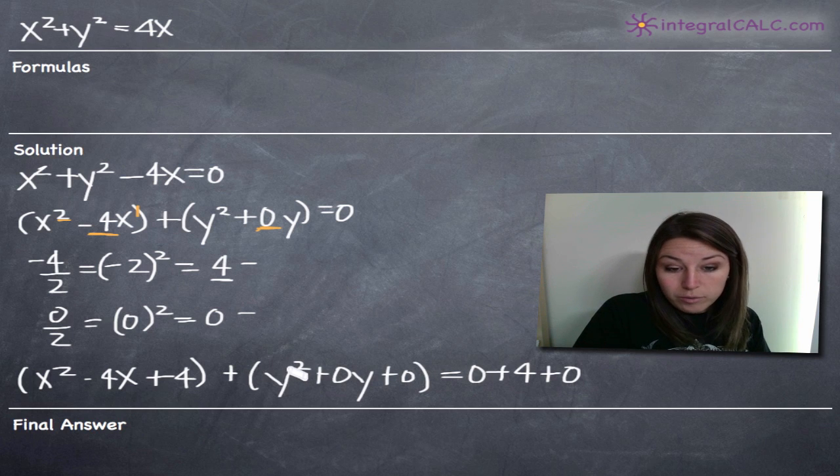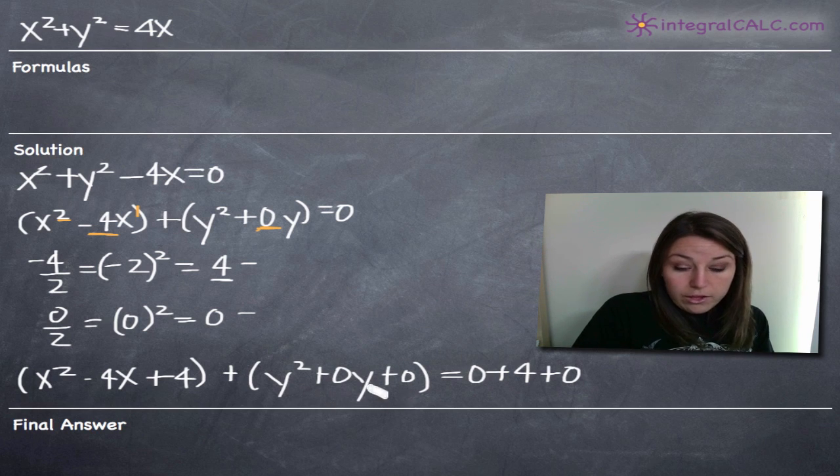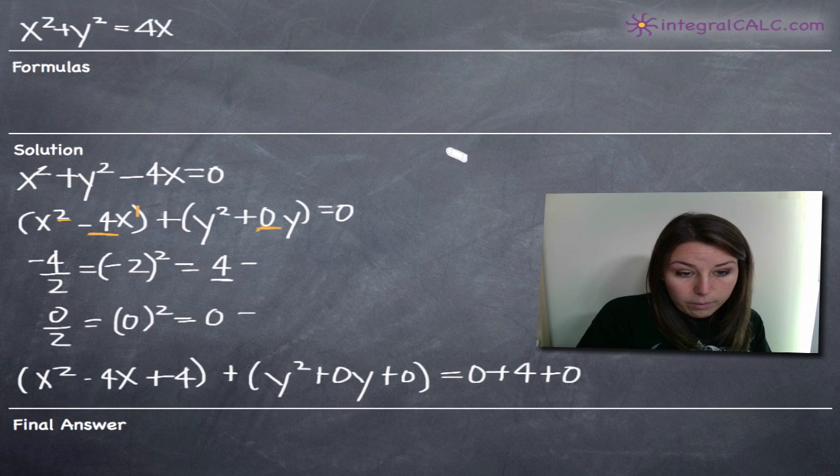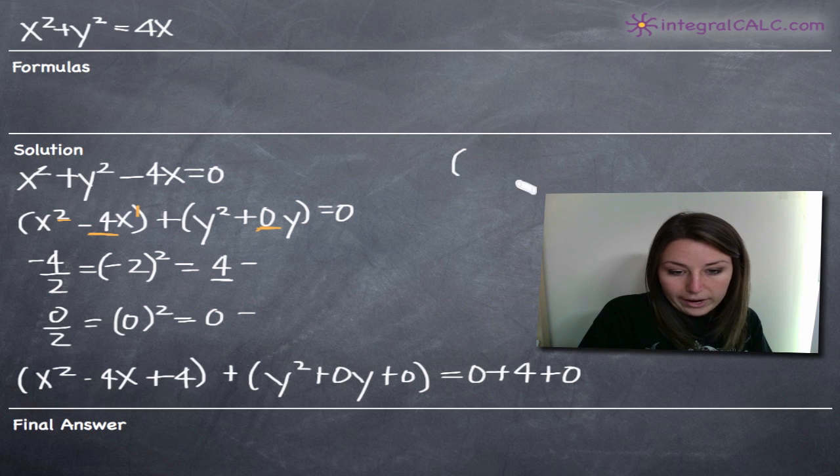The same terms are always going to be added to both the left-hand side and the right-hand side, otherwise you're fundamentally changing the equation. So now we'll go ahead and simplify this. Since we completed the square, we can now factor both of our x and y terms.